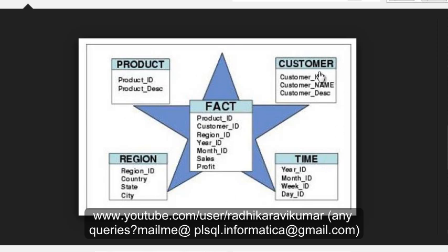Before getting into star schema and snowflake schema, it's very much mandatory to know what fact and dimension are. The fact table will always contain aggregated values. As we know from the basics of SQL, aggregated things include sum, min, max, and similar functions.